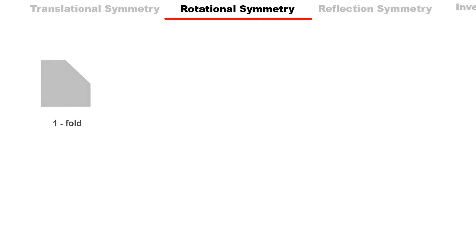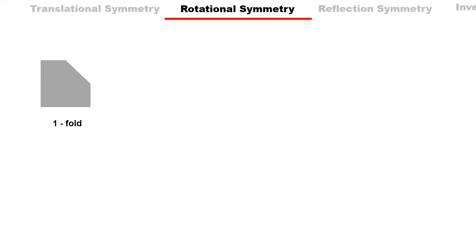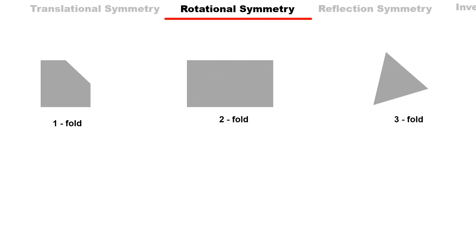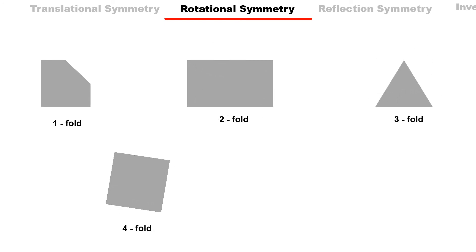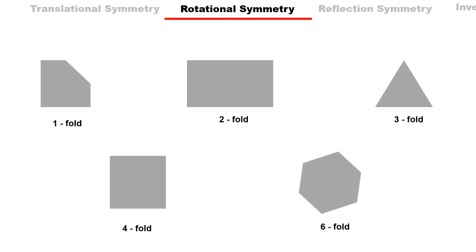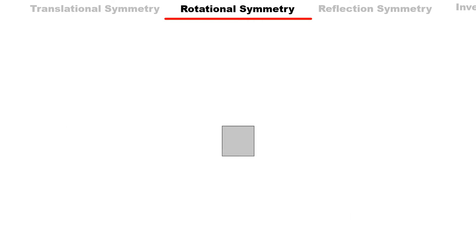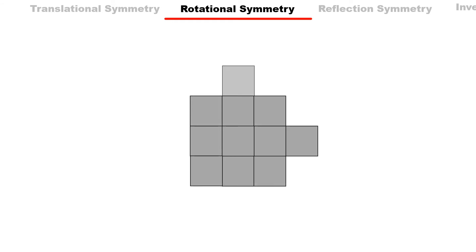Considering a few more examples of fold of rotation: an arbitrary shape repeats itself once in 360 degrees, so it has one-fold rotational symmetry. Similarly, two-fold rotation is found in a rectangle, three-fold in a triangle, four-fold in a square, and six-fold rotational symmetry in a hexagon. Five-fold, seven-fold, eight-fold, or higher fold rotational symmetry does not exist. This is because of the translational symmetry found in crystals — the repetition of unit cells must leave no vacant space between them, and translational vectors can only be defined for such crystals.